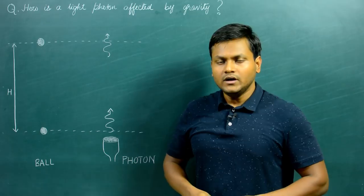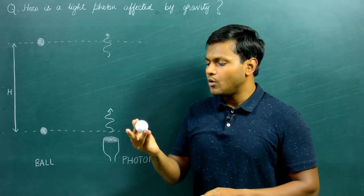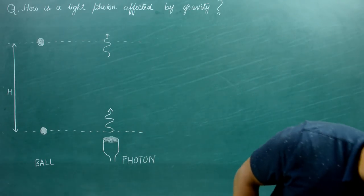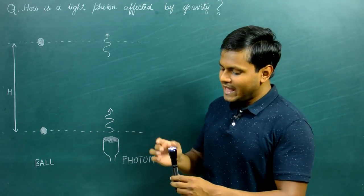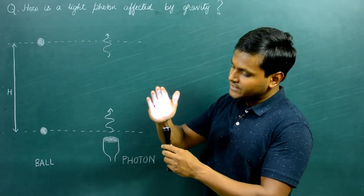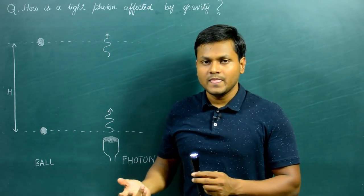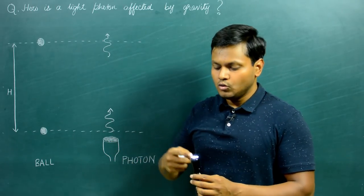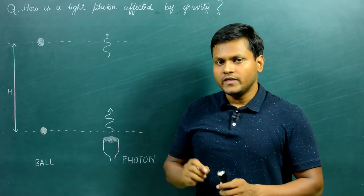Now what if I replace this ball with something else? What if I replace this ball with a light photon? So here I have a torch. If I switch on the torch, the torch is basically emitting light photons — a large number of photons which are traveling upwards, against the gravitational pull of the earth itself. So can I expect a similar behavior with the light photon — that it goes up, decreases its velocity, and comes back down?